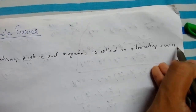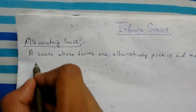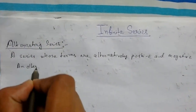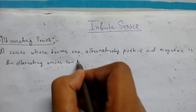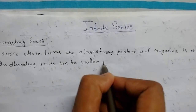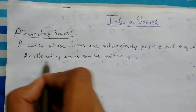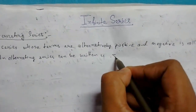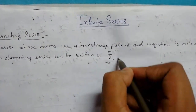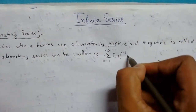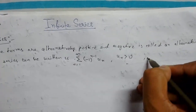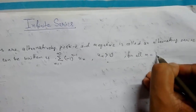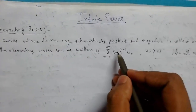An alternating series can be written as summation n from 1 to infinity of minus 1 whole to the power n minus 1, times u_n, where u_n must be greater than 0 for all n, that is n = 1, 2, 3, and so on.